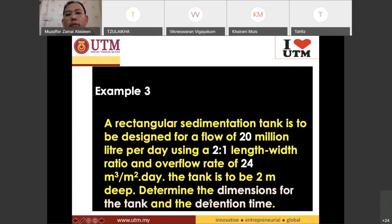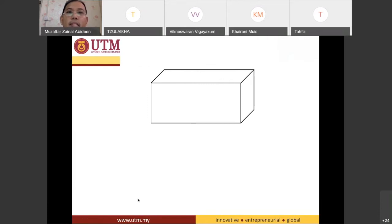I would like to extract this question into a diagram. So we have a rectangular sedimentation tank and it says that the Q is 20 MLD and also they say the ratio of length to width is actually 2 to 1. So you can do the, I do not know what we call it in English, I call it darab silang.